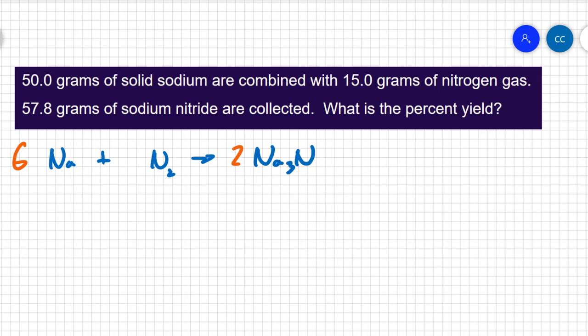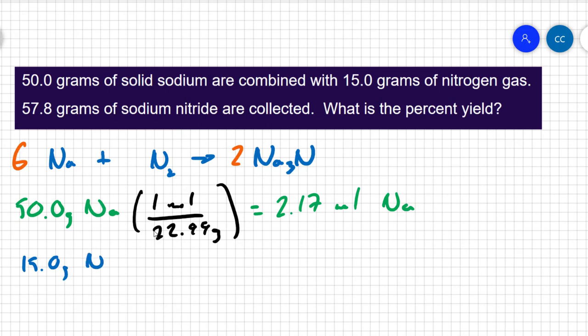Let's start converting to moles. I have 50 grams of sodium. Sodium has a molar mass of 22.99 grams, so that means I have 2.17 moles of sodium. Now we have to do the same thing for the nitrogen, 15 grams of nitrogen. Molar mass of nitrogen is 28.0134. Don't forget that nitrogen is a diatomic in that calculation. So I have 0.535 moles of nitrogen gas.